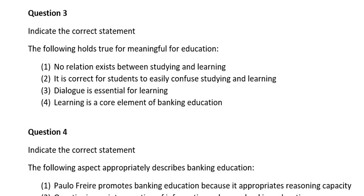Question three. Indicate the correct statement. The following holds true for meaningful education: number one, no relation exists between studying and learning; number two, it is correct for students to easily confuse studying and learning; number three, dialogue is essential for learning; number four, learning is a core element of banking education. The correct answer is number three: dialogue is essential for learning.